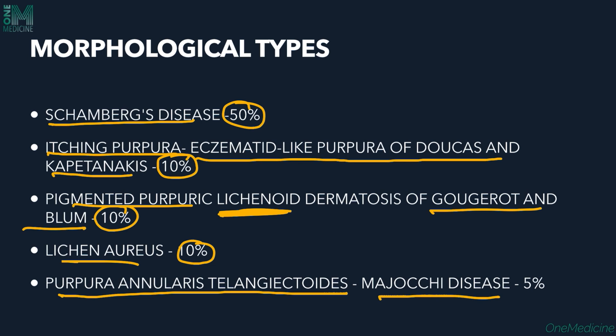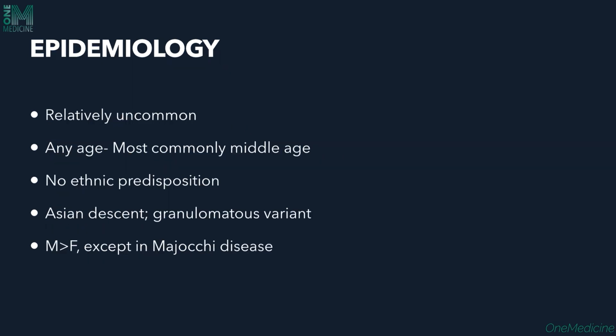Purpura annularis telangiectodes, also called Majocchi's disease, accounts for about 5% of cases. It should not be confused with Majocchi's granuloma, which is a fungal infection caused by Trichophyton rubrum presenting with nodular and follicular subcutaneous types. Majocchi's disease is not a fungal infection.